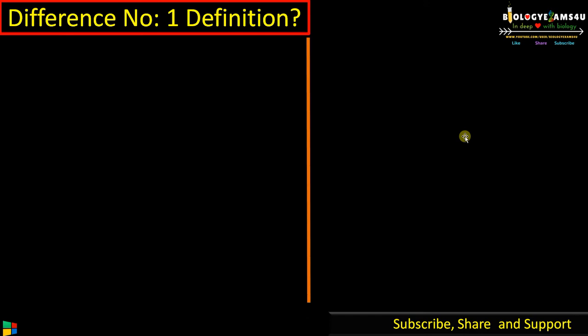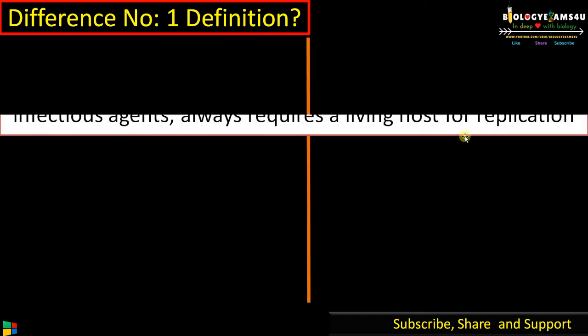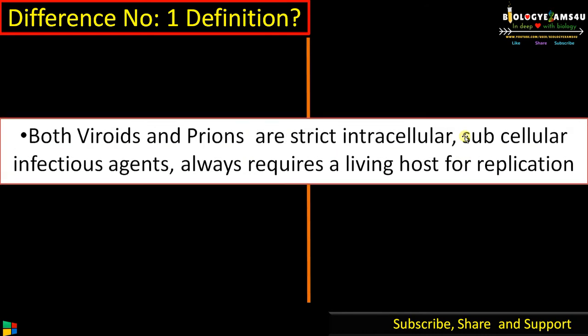Let's begin with the similarity. Both viroids and prions are strict intracellular subcellular infectious agents that always require a living host for replication.